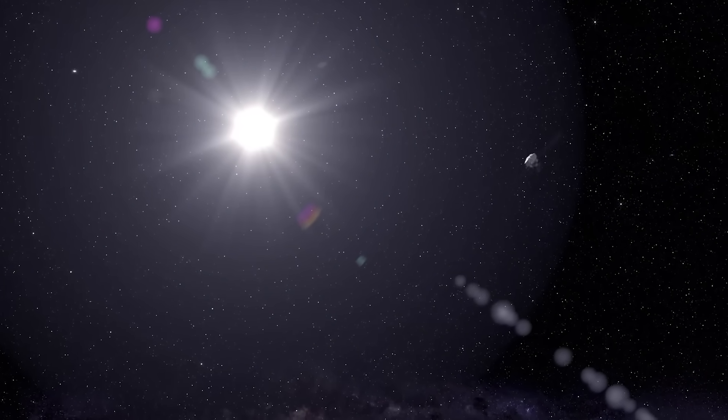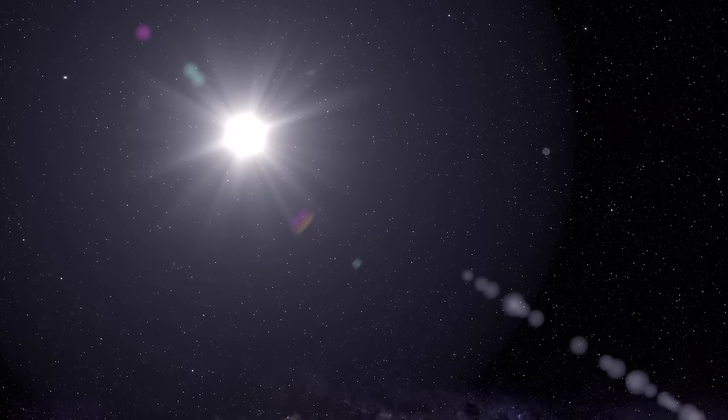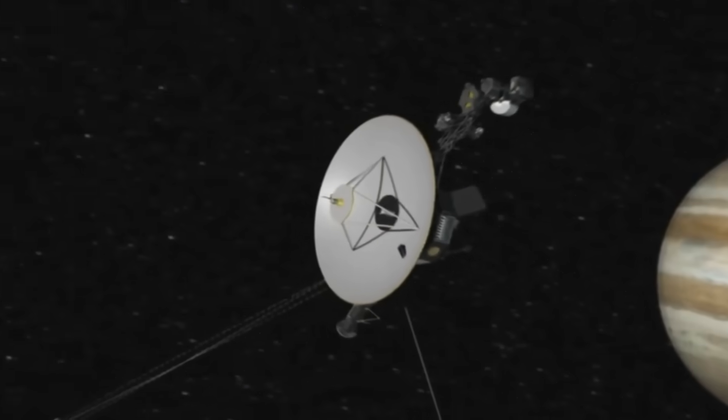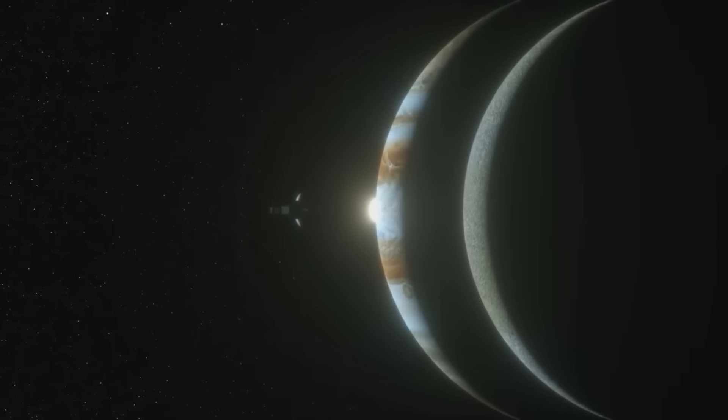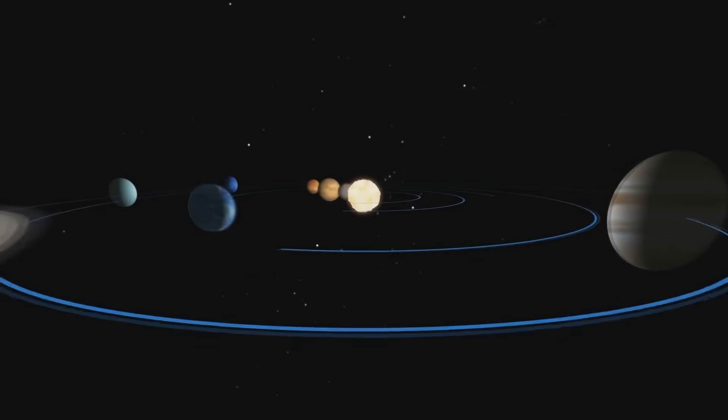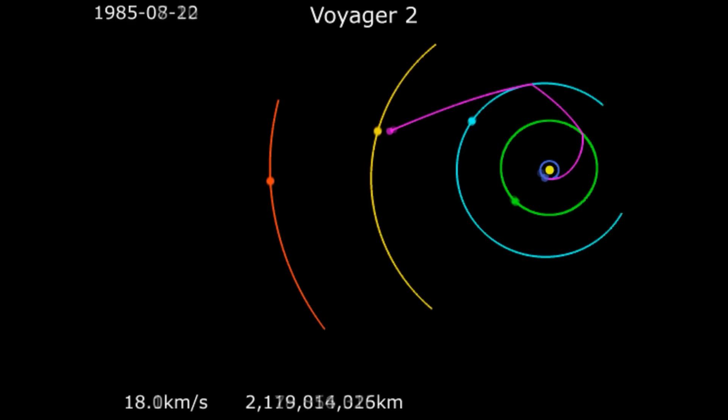For decades, Voyager 2 drifted silently through the void, a ghost ship in the stars, slowly fading from memory. Most assumed its journey had become symbolic, a relic of scientific ambition from another era. But that changed the moment it crossed the outer edge of the solar system.